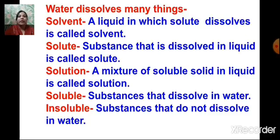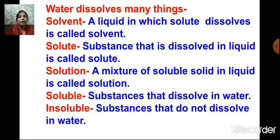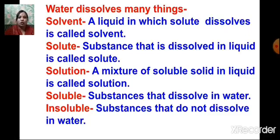So here, water becomes the solvent. A liquid in which a solute dissolves is called the solvent. The substances like sugar and salt which we dissolve in a liquid are called the solute. And when we mix a solute into a solvent, we get a solution.